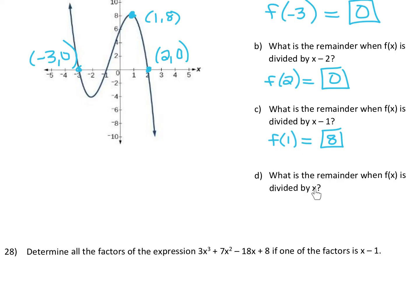Part D asks: what is the remainder when f(x) is divided by x? We have to think of x as x minus 0 or x plus 0, so really we're looking for f(0) — plugging 0 in for x. Going to the graph at x = 0, the graph is all the way up at a height of 6. The coordinates are (0, 6), so f(0) = 6. The remainder would be 6.